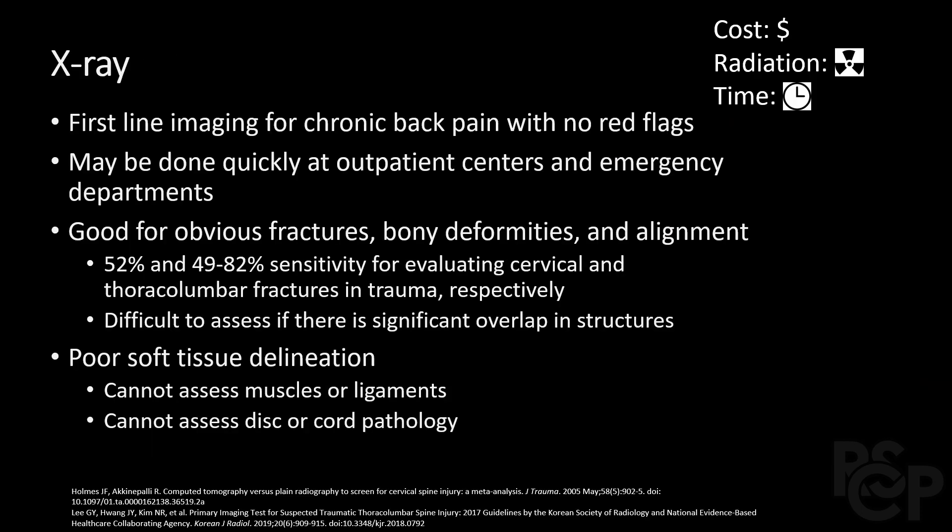Firstly we have the plain radiograph. This is often first-line imaging for patients with chronic back pain and no red flags. It is cost effective, has low radiation, and is relatively quick. X-ray machines are commonly found in urgent cares, PCP offices, and emergency departments. It is a good tool to look for large fractures, deformities, and malalignment, but can miss some of the more subtle findings.